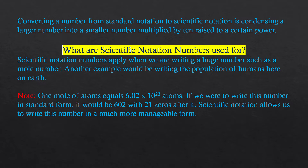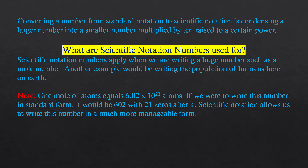Scientific notation allows us to write this number in a much more manageable form. In summary, scientific notation helps us write a number in a shorter way where we don't have to write so many digits all the time. If we did have to write the entire number it would consume a lot of time.